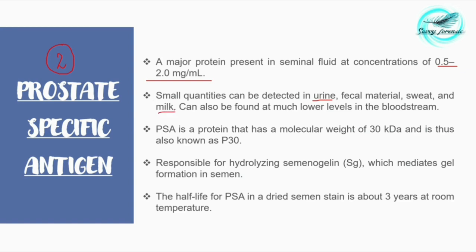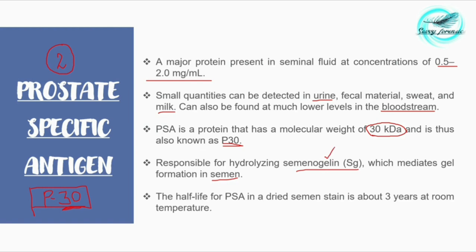PSA can be present in minor quantities in urine, fecal matter, sweat, and milk, and can also be found at much lower levels in the bloodstream. PSA has a molecular weight of 30 kD and is therefore also called P30. It is responsible for hydrolyzing semenogelin, which mediates gel formation — the jelly texture — in semen.